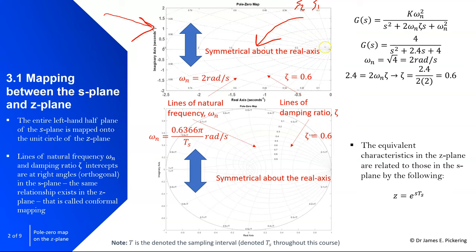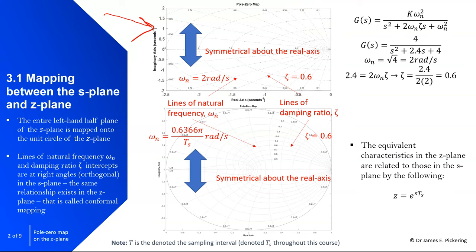Then we also have lines going around — these are your lines of natural frequency, denoted omega. In this case, omega 1 and omega 2, where omega 2 is obviously greater than omega 1. When we work out the poles of a closed loop transfer function, we map the poles onto here. A pair of complex conjugate poles have a natural frequency and a damping ratio.